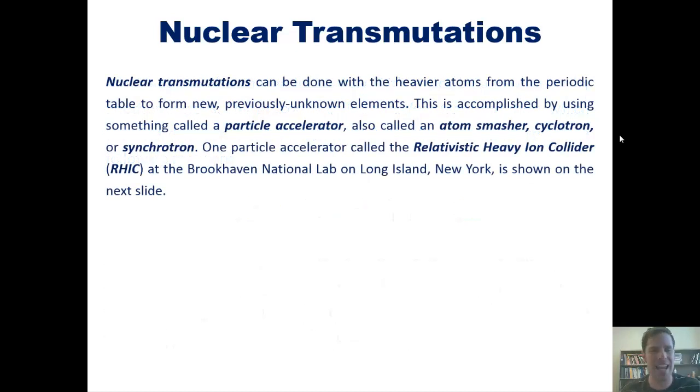Now, nuclear transmutations can be done with heavier atoms from the periodic table to form new, previously unknown elements. This is accomplished by using something called a particle accelerator, also called an atom smasher, cyclotron, or synchrotron. One particle accelerator called the Relativistic Heavy Ion Collider, or RHIC, at Brookhaven National Lab on Long Island, New York, is shown on the next slide.